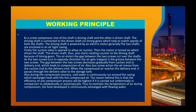When the compressed air reaches the delivery end, it passes through the delivery valve to the storage tank, where it is stored. By using the valve on the storage tank we can use the compressed air at a certain pressure. A pressure gauge is provided in the storage tank to measure the pressure of the compressed air. During the compression process, cold water is continuously run around the casing, which exchanges heat with the hot compressed air — this is an isothermal process, which increases the efficiency of the system compared to an adiabatic process.